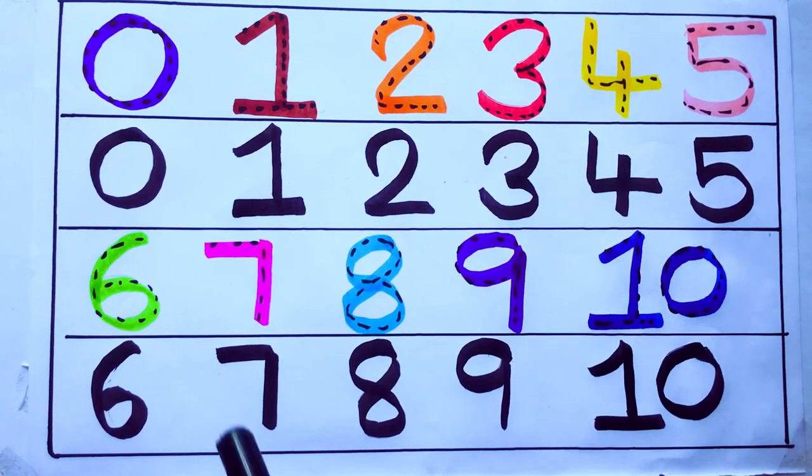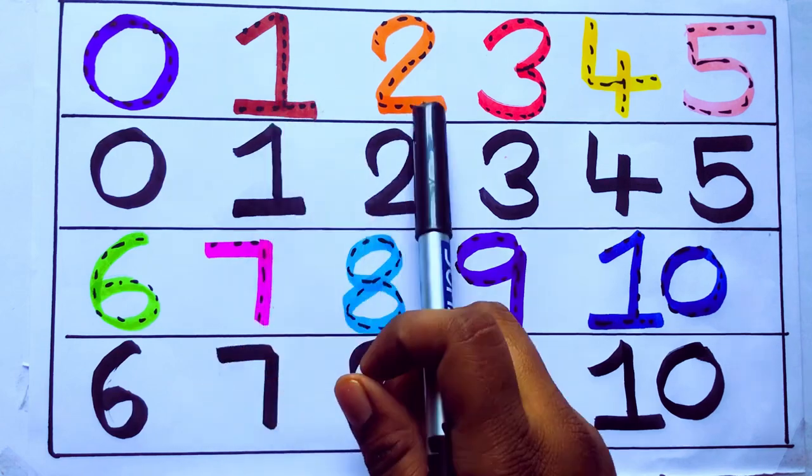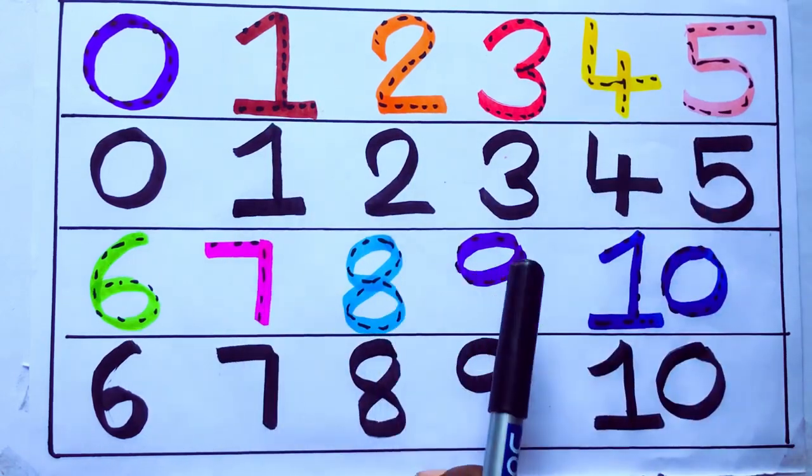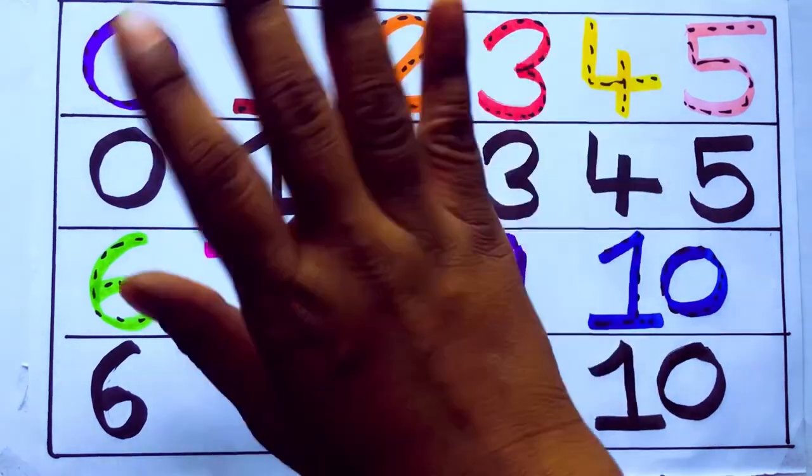Second time learning numbers: 0, 1, 2, 3, 4, 5, 6, 7, 8, 9, 10. Okay, bye kids!